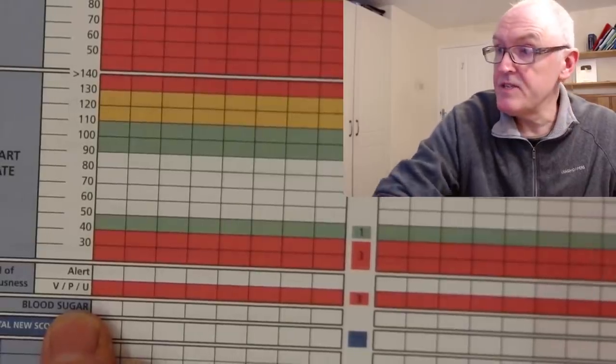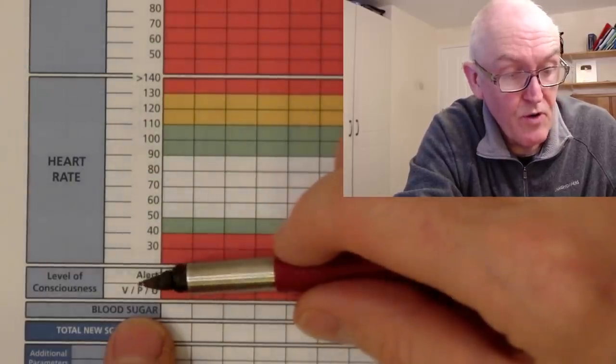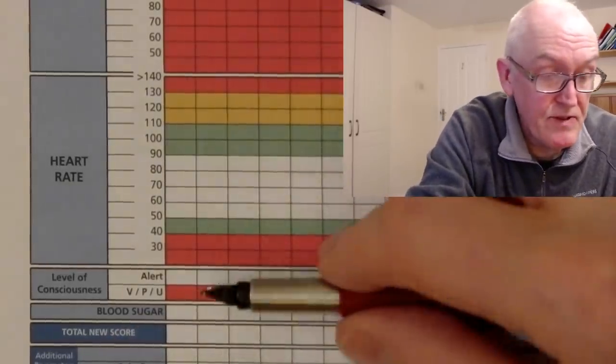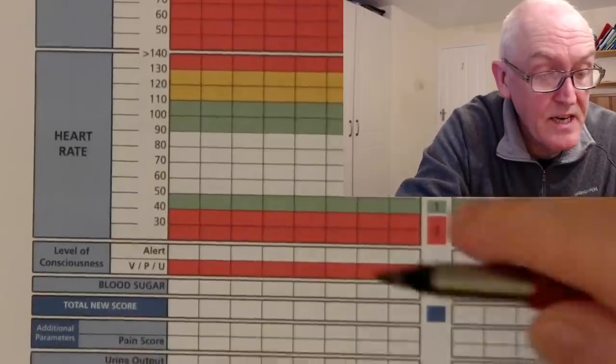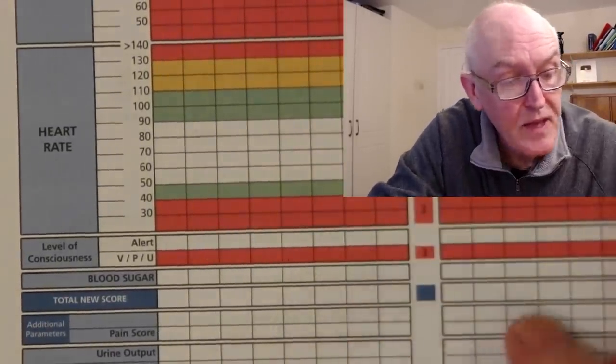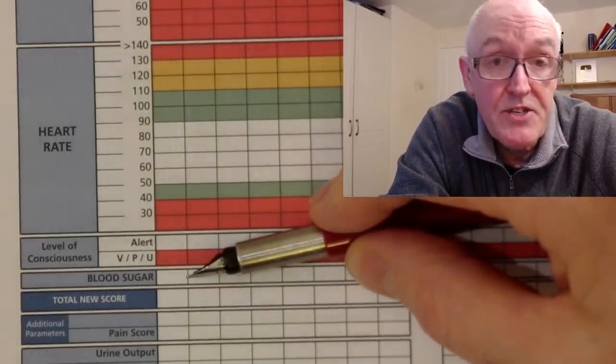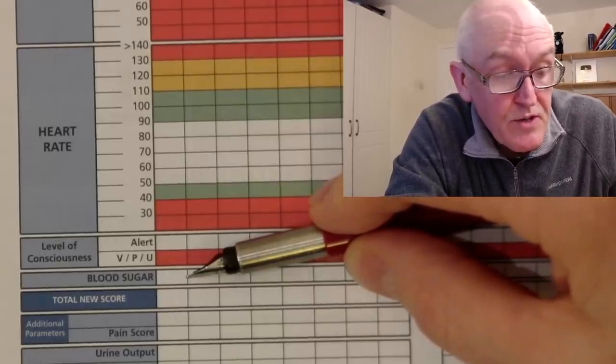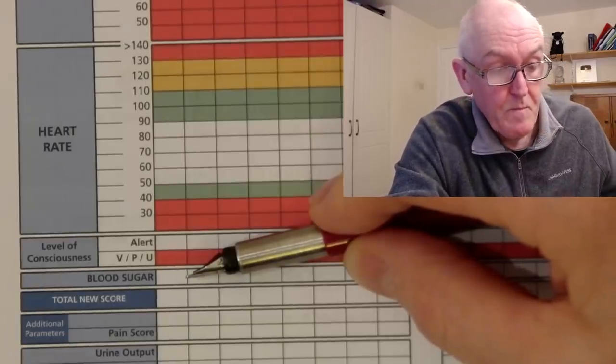This score here is AVPU. A is alert, V is response to voice, P is response to pain, U is the patient is unresponsive. So we'd write that letter in there as a guide to their level of consciousness. You can't take blood sugar levels, blood glucose levels, without a special machine to do that. But what normally happens in infection is because you need to produce plenty of energy, and the quickest way your body can produce energy is glucose, then your blood sugars tend to go up. So in infection, the blood sugar tends to go up.